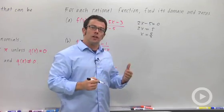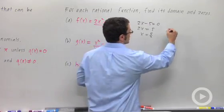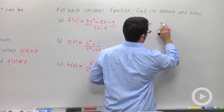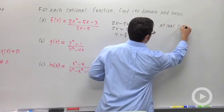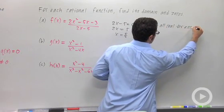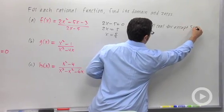So the domain is all real numbers except 5 halves. All real numbers except 5 halves.